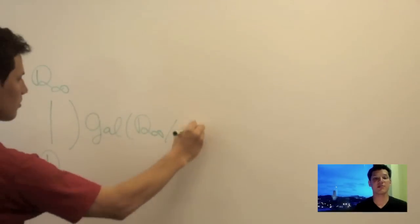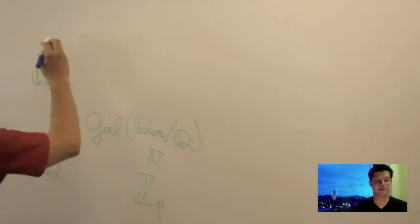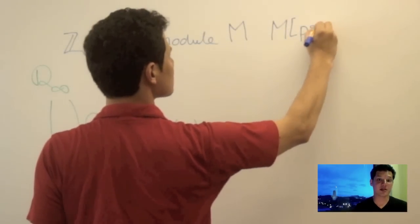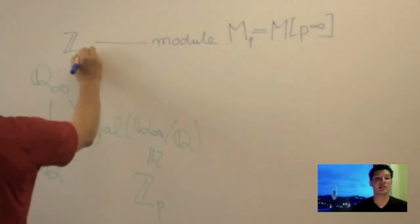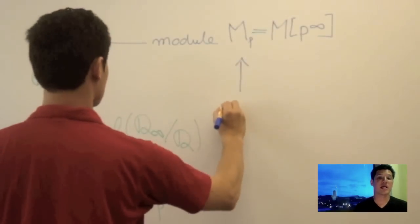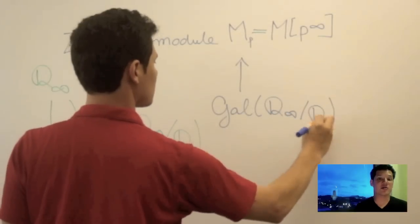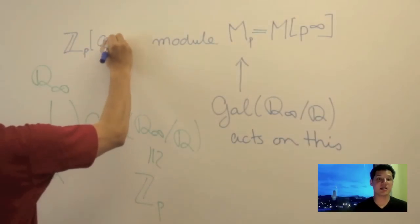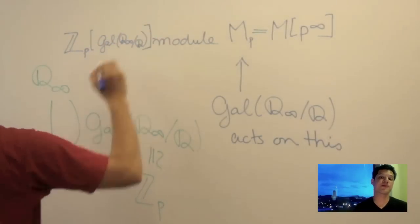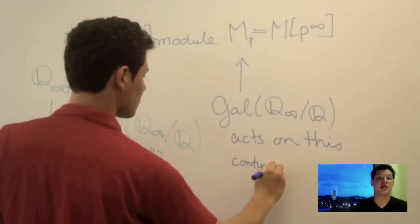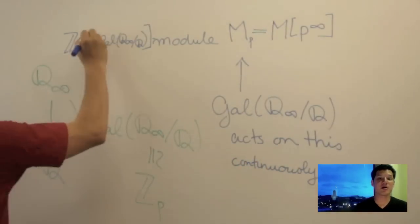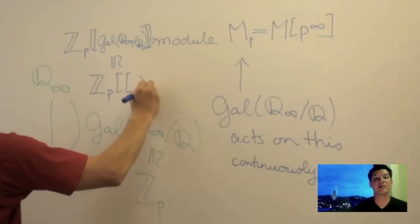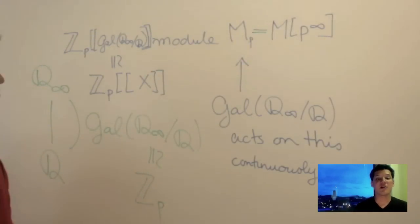We denote the cyclotomic ZP extension of Q by Q infinity. Now let's suppose we're given a Z module M. We can look at the P primary part of M, called MP. This then has the structure of a ZP module. Now assume that the Galois group, Gal Q infinity over Q, acts on MP. Then MP is a module over the group ring ZP adjoint Gal Q infinity over Q. If you assume continuous action, then MP is actually a module over a ring which turns out to be isomorphic to ZP double adjoint X. Now ZP double adjoint X is a very special ring of p-adically analytic functions.